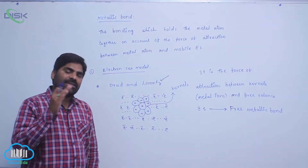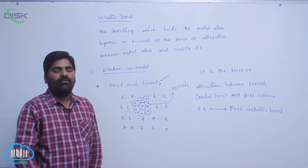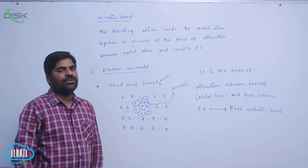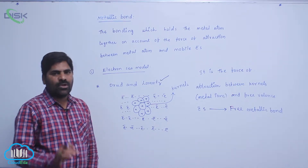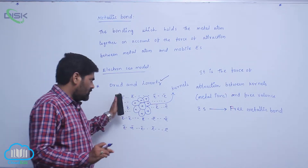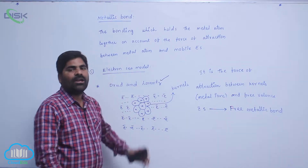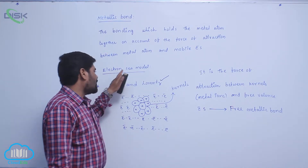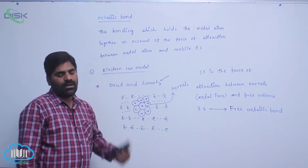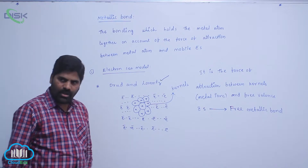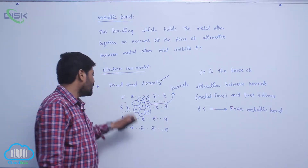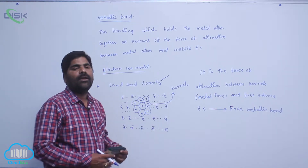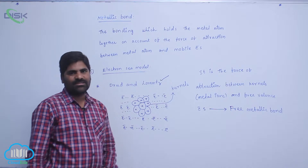Therefore, the attractive force between valence electrons and metal atoms is known as the metallic bond, according to the Electron Sea model. In the Electron Sea model, valence electrons are attracted by metal atoms to form kernels.